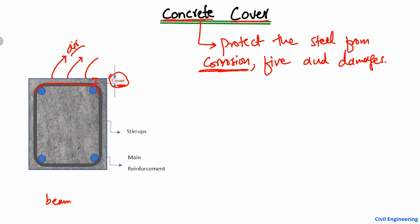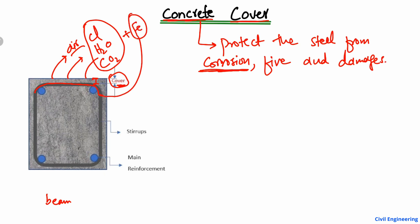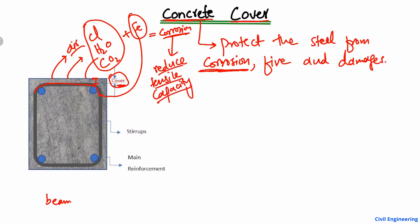This cover is provided to protect the reinforcement bar from the outside environment, because in the outside environment, air is present — we have chloride ions, H₂O water molecules, and CO₂ carbon dioxide molecules. These molecules react with the iron from the steel reinforcement bar and produce corrosion products, which lower the strength of the steel bar and reduce its tensile capacity.